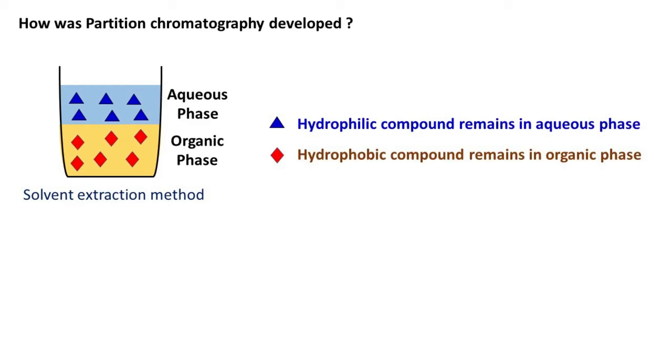Since both the phases are immiscible, they form a separate layer depending on the density. Now the phases can be easily separated with the help of a separating funnel.